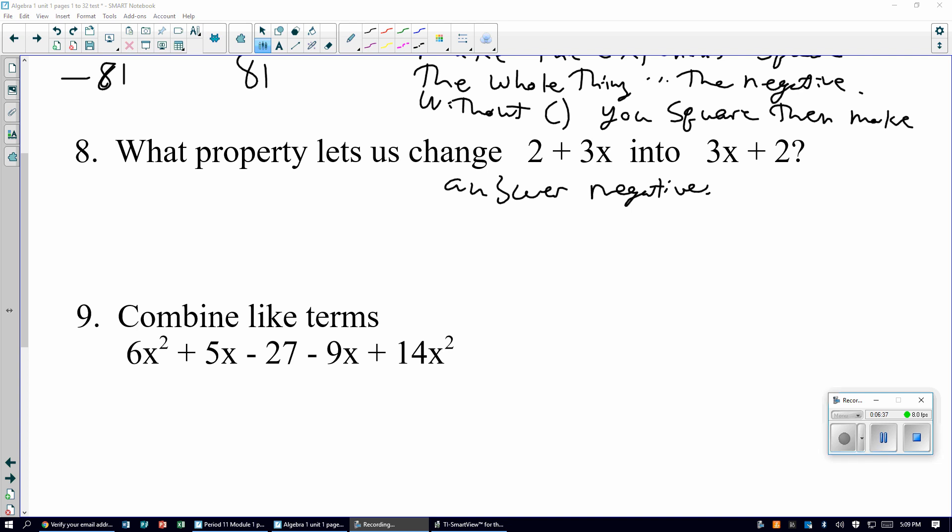What property lets us change 2 plus 3x into 3x plus 2? It's the commutative property of addition.